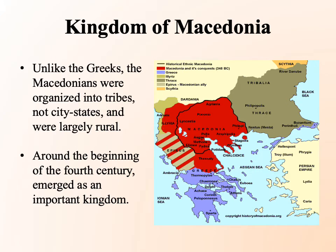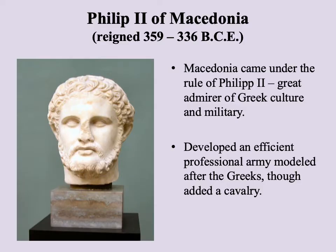We now turn to Alexander the Great. Philip II had established a kingdom in Macedonia to the north of Greece. Unlike the Greeks, the Macedonians were not organized into city-states but rather into tribes — a much more rural civilization. For a while they constituted a confederation of semi-independent tribes, but eventually emerged into a unified kingdom around the fourth century. The key figure in that regard is Philip II of Macedonia, who reigned from 359 to 336 BCE — he's the guy who pulled it all together.